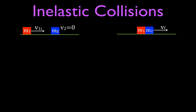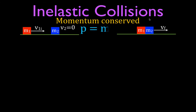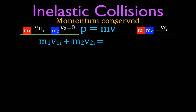An object is moving, collides with an object that's not moving, and they move off together. Since momentum is conserved, we use the momentum equation — momentum equals mass times velocity. The total momentum before the collision is M1 times V1 initial plus M2 times V2 initial. By conservation of momentum, that equals the final momentum: (M1 + M2) times the final velocity, since the objects are now stuck together with a total mass and a single velocity.